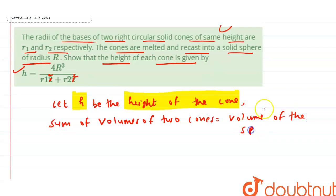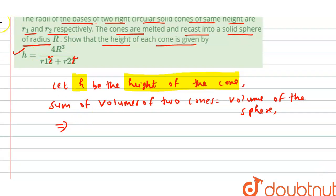We have 1/3 π R1² H plus 1/3 π R2² H equals 4/3 π R³.